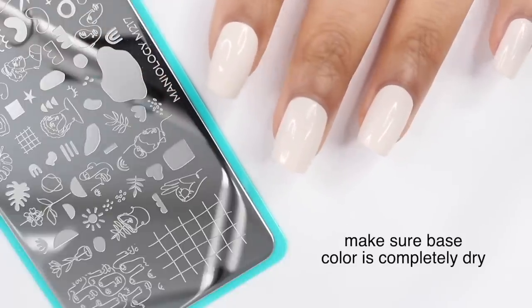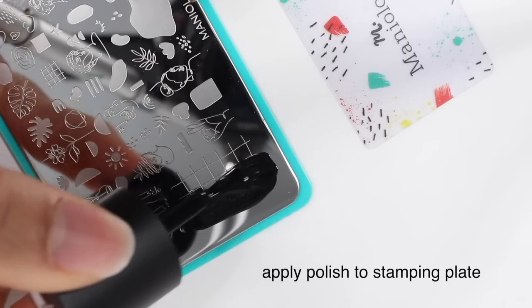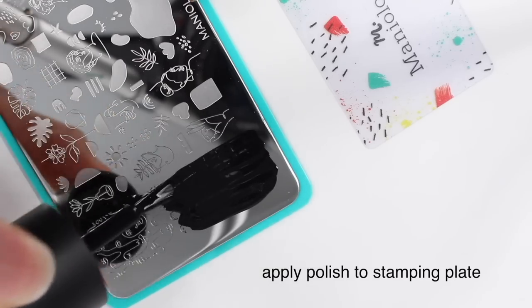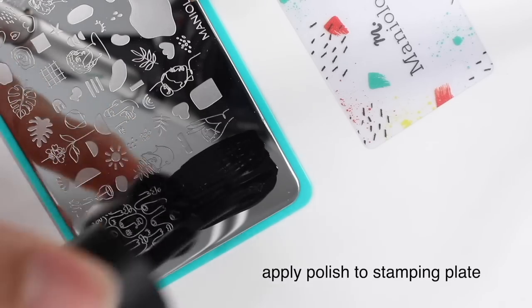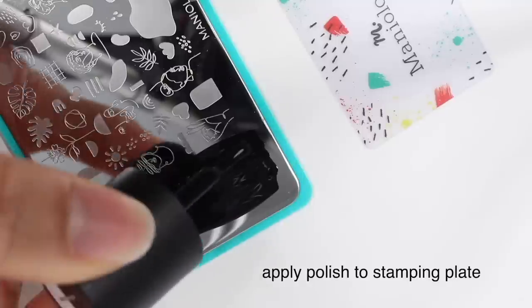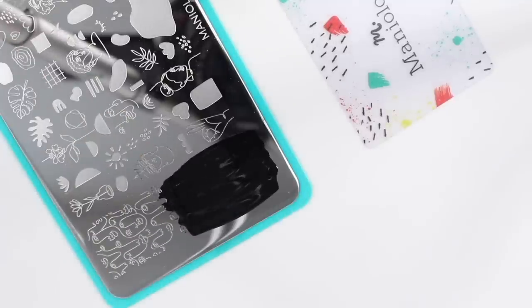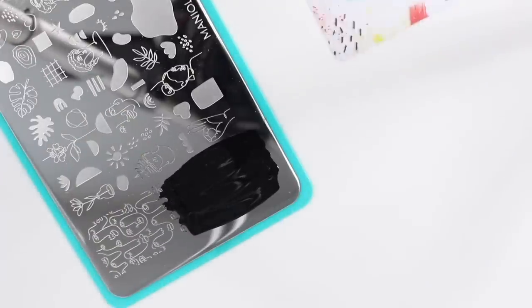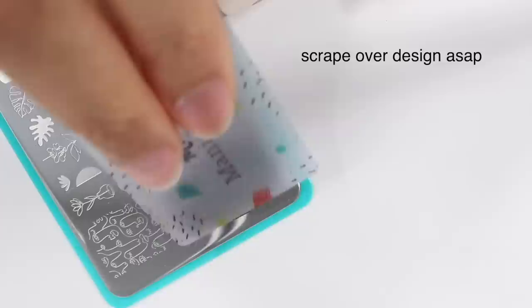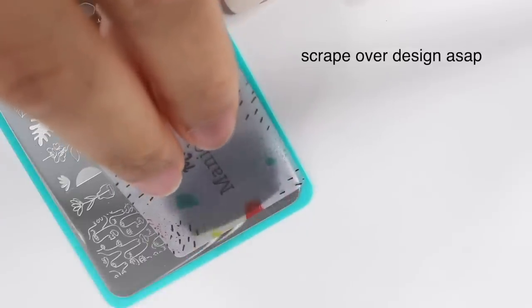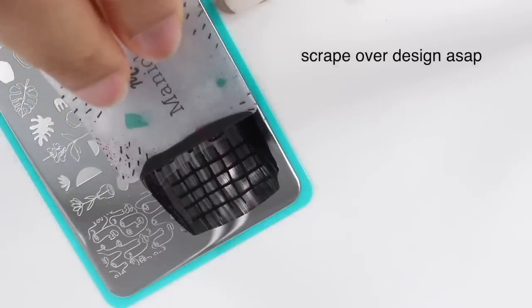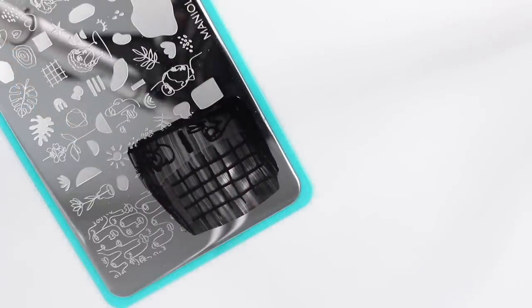I started off with a completely dry base and then I just applied the black stamping polish over this grid design in the corner that I thought was so cute. And right away I went over that with my scraper. So this is in real time just so you guys can have an idea of how fast I was working. I didn't really have a method to this. I just kind of bent it over and scraped out the design, and I figured it was important to not let the nail polish dry.